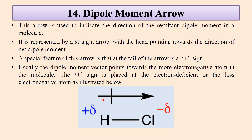Then there is the dipole moment arrow. This arrow is used to indicate the direction of the resultant dipole moment in a molecule. It is represented by a single straight arrow with the head pointing towards the direction of the net dipole. A special feature of this arrow is that the tail is marked with a positive sign. The dipole moment vector points towards the more electronegative atom, and the positive sign is placed at the electron-deficient or partial-positive or less electronegative element.